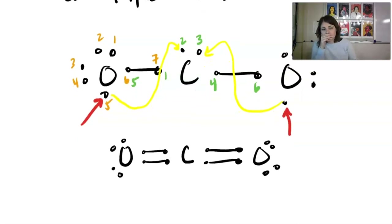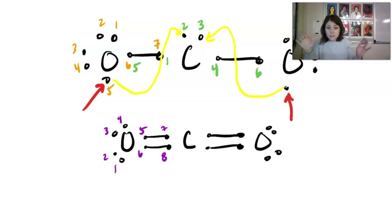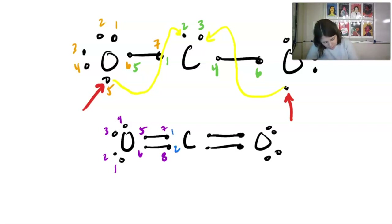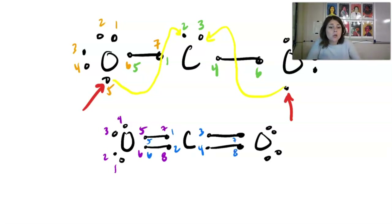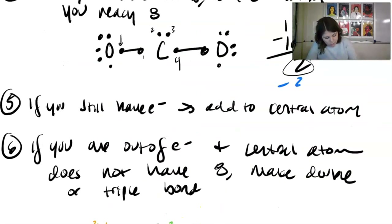After forming the double bonds and redrawing the structure, let's verify: oxygen now has six valence electrons plus shares two more for eight total — and the other oxygen is the same. Carbon in the middle: counting all shared electrons gives eight total. We're good, the structure is complete, and we have zero electrons left.